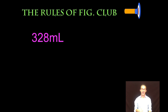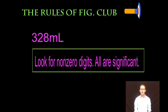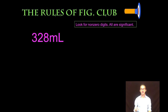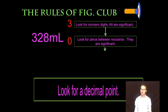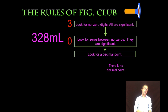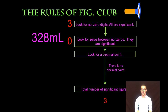As you take a look at the first measurement — 328 milliliters — first rule of big club: look for non-zero digits. Anything that is not a zero is significant. In this case, all three digits are significant: the 3, the 2, and the 8 aren't zeros, so they must have been measured. Rule number two: look for zeros between non-zeros — don't have to worry about it here. Rule number three: look for a decimal point — there is none, so we get there one step quicker. Our total number of sig figs here is three significant figures.